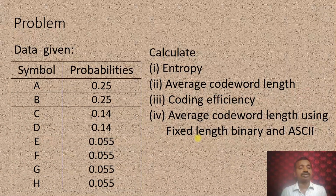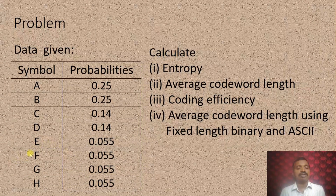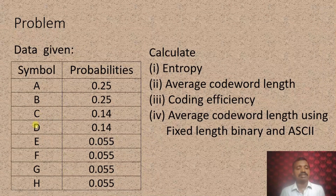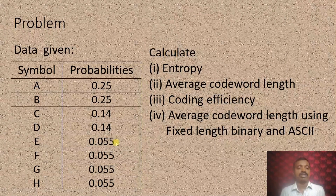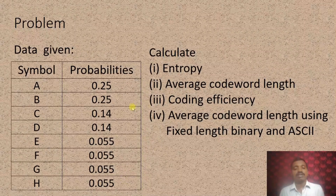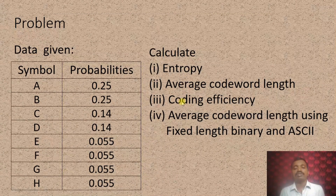Here I am going to use a source alphabet that consists of eight symbols: A with probability 0.25, B with probability 0.25, then C and D with probability 0.14, and E, F, G, H each with probability 0.055. When you add up these probabilities, they will add up to unity. For this problem, we are going to calculate the entropy, average code word length, coding efficiency, and the average code word length using fixed-length binary and ASCII.